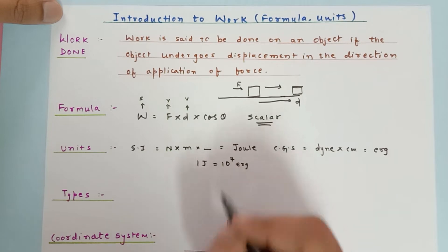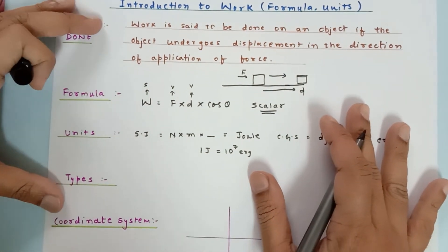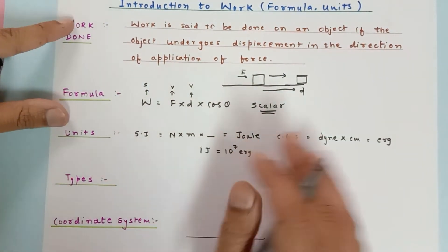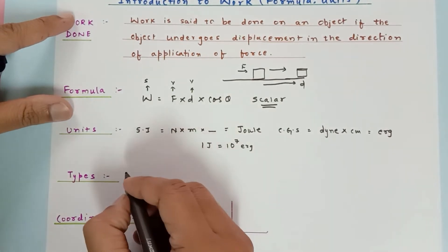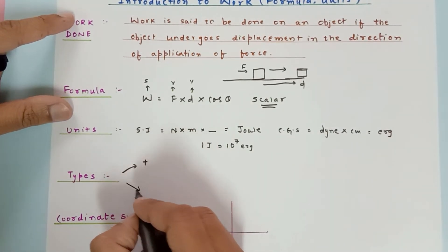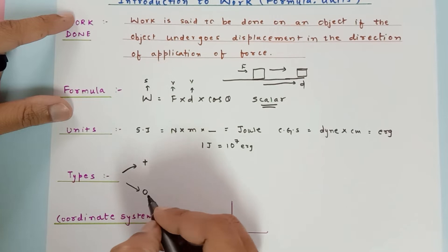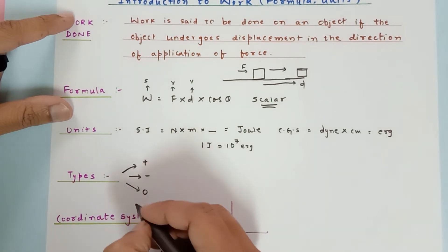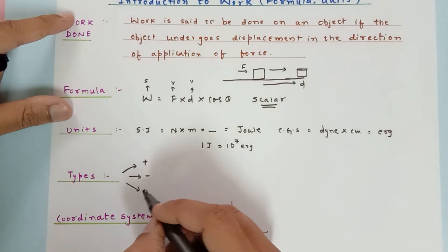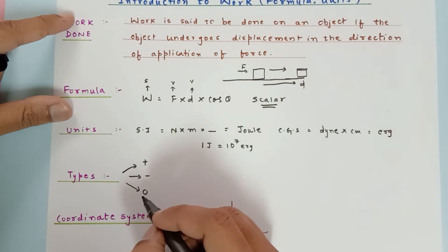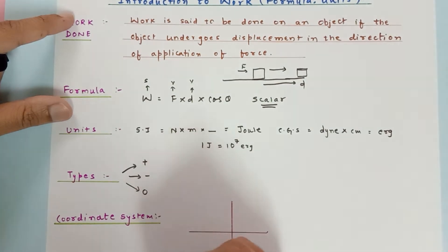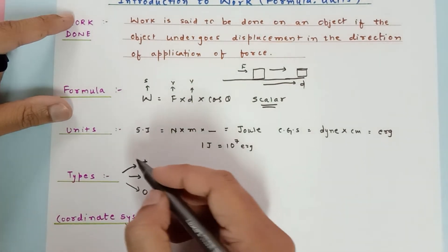Work done is classified into three parts: work done can be positive, negative, or zero. We will see situations in which the work done is zero, positive, and negative, and we will find out the meaning of each.